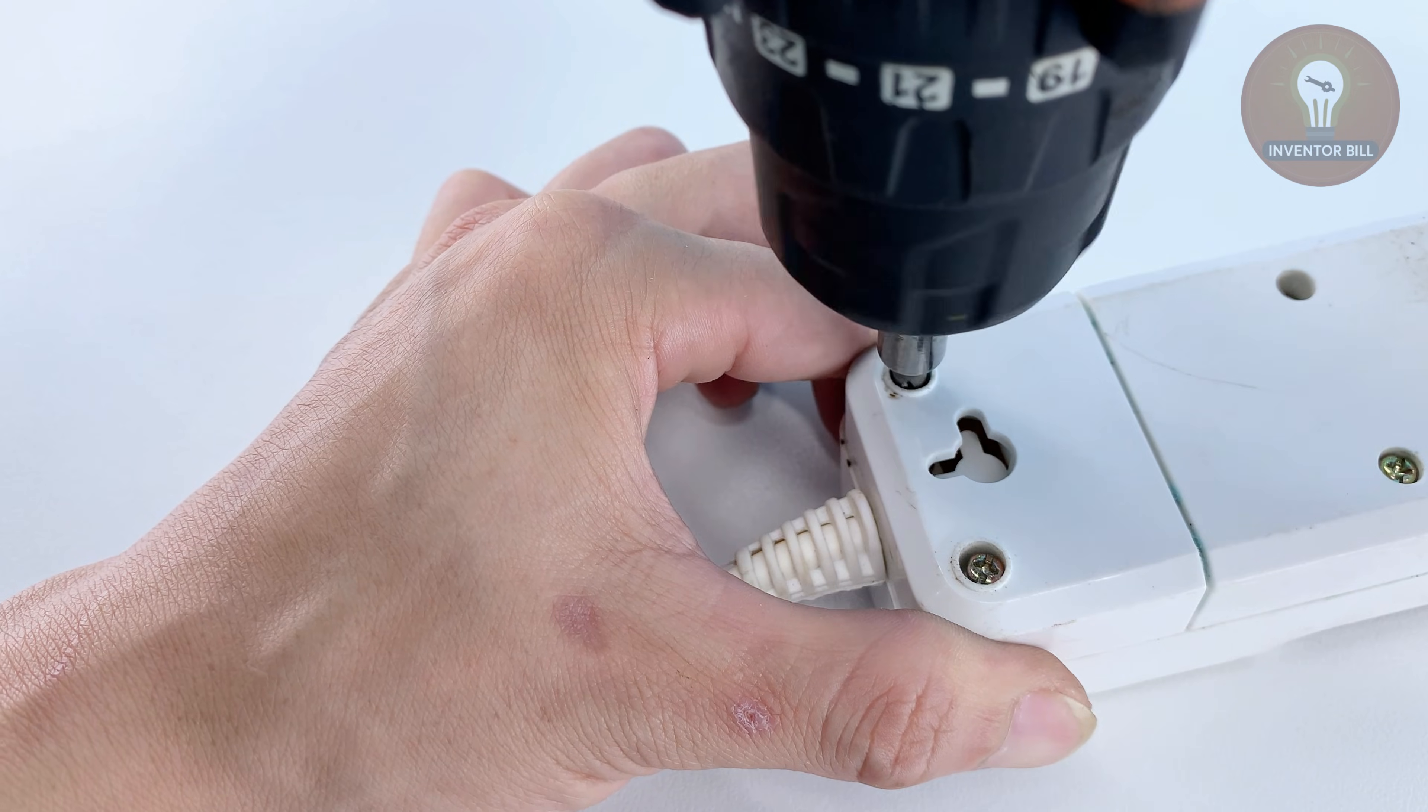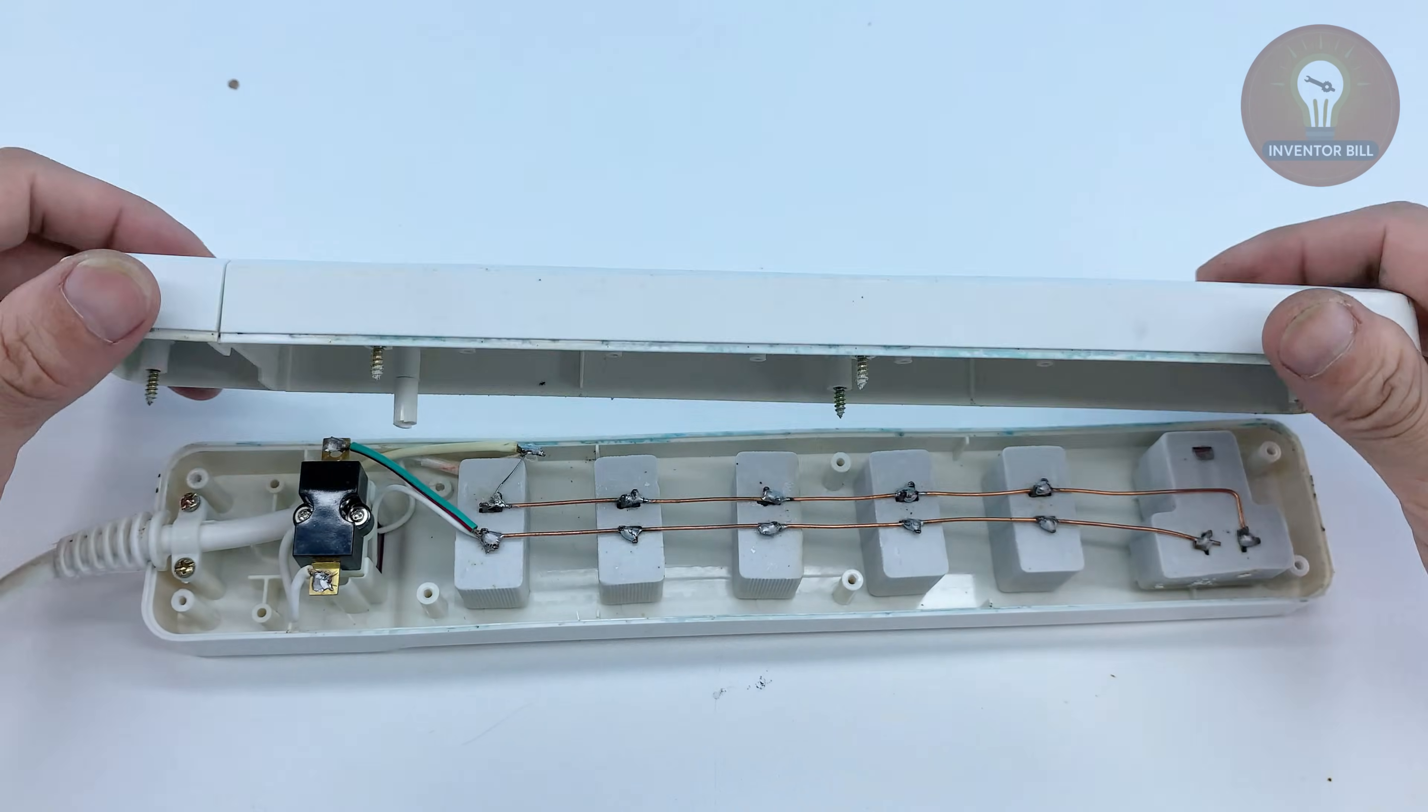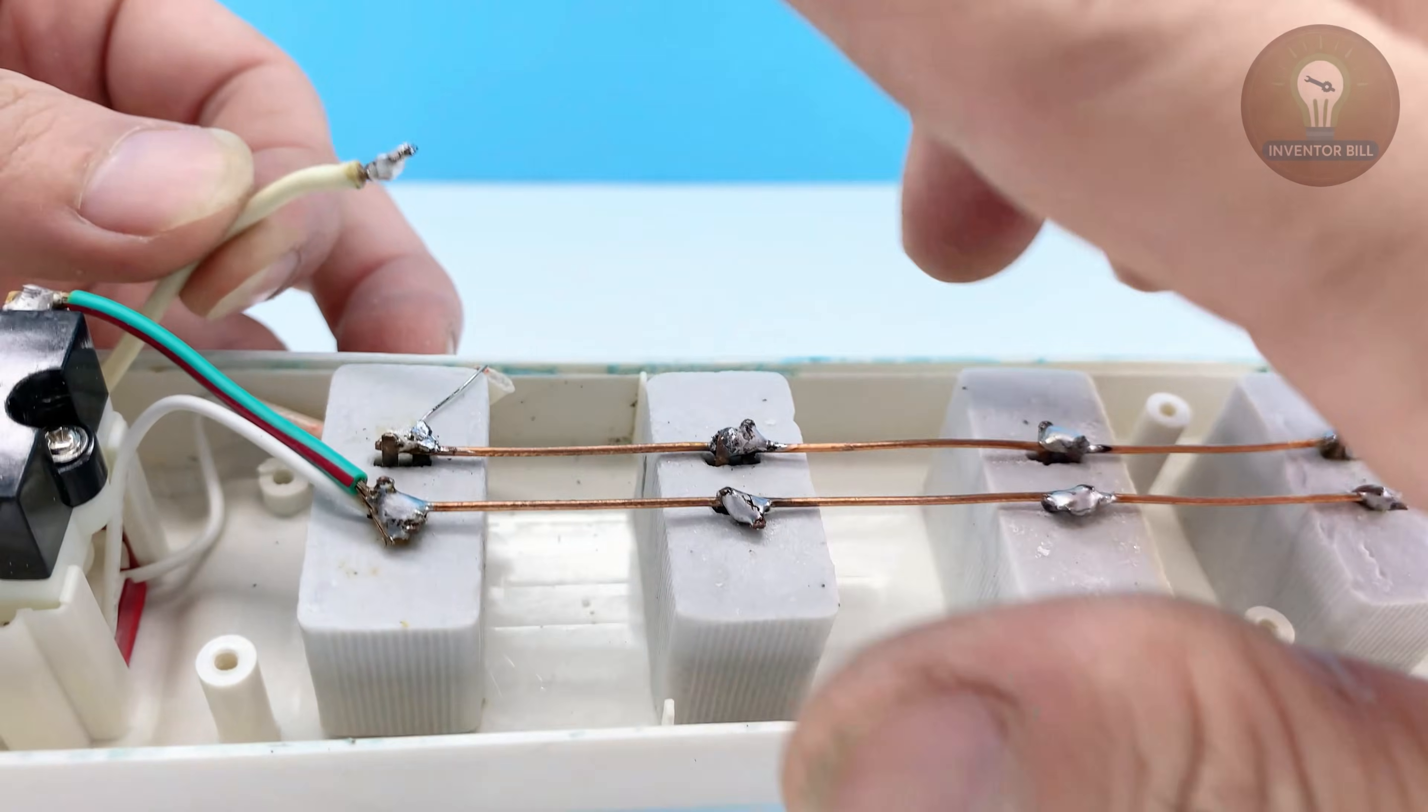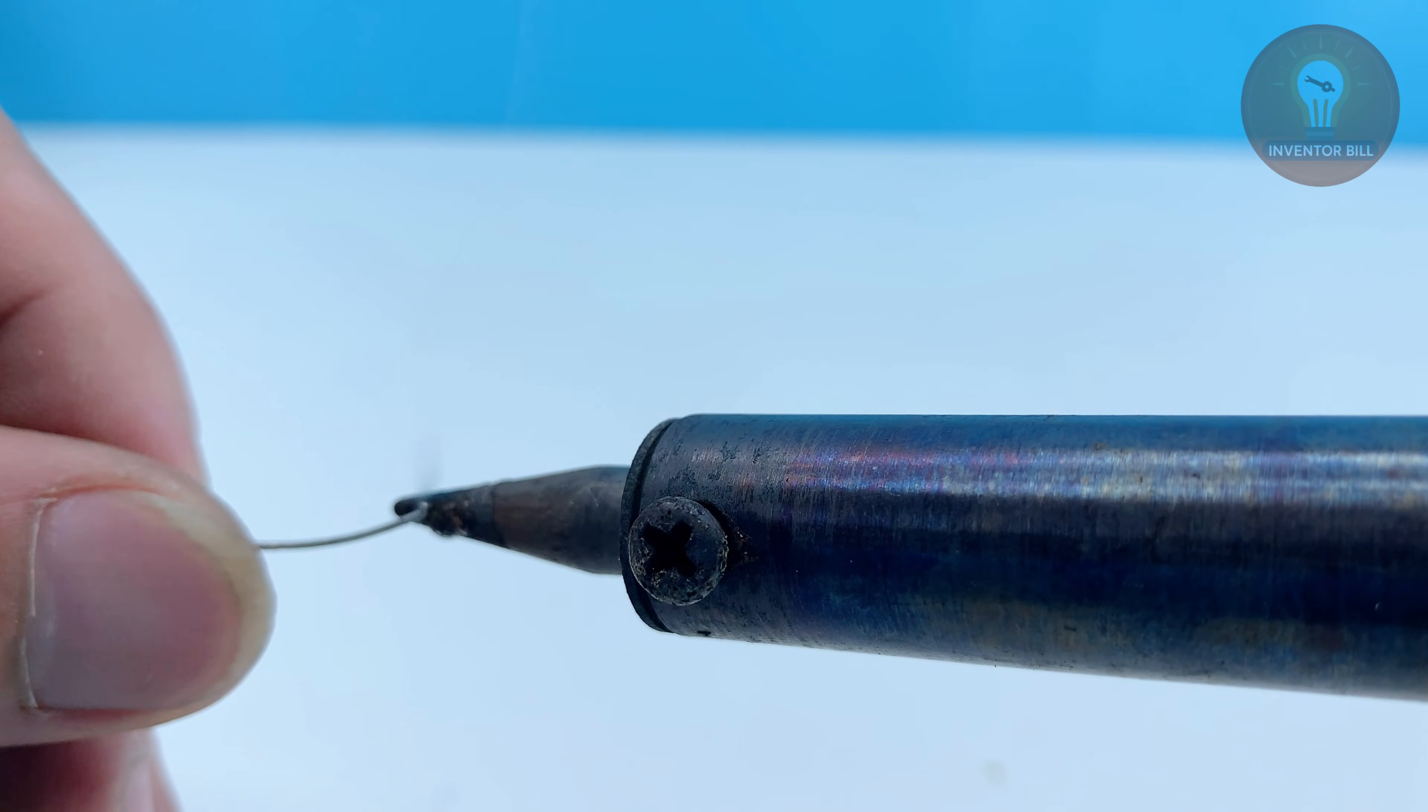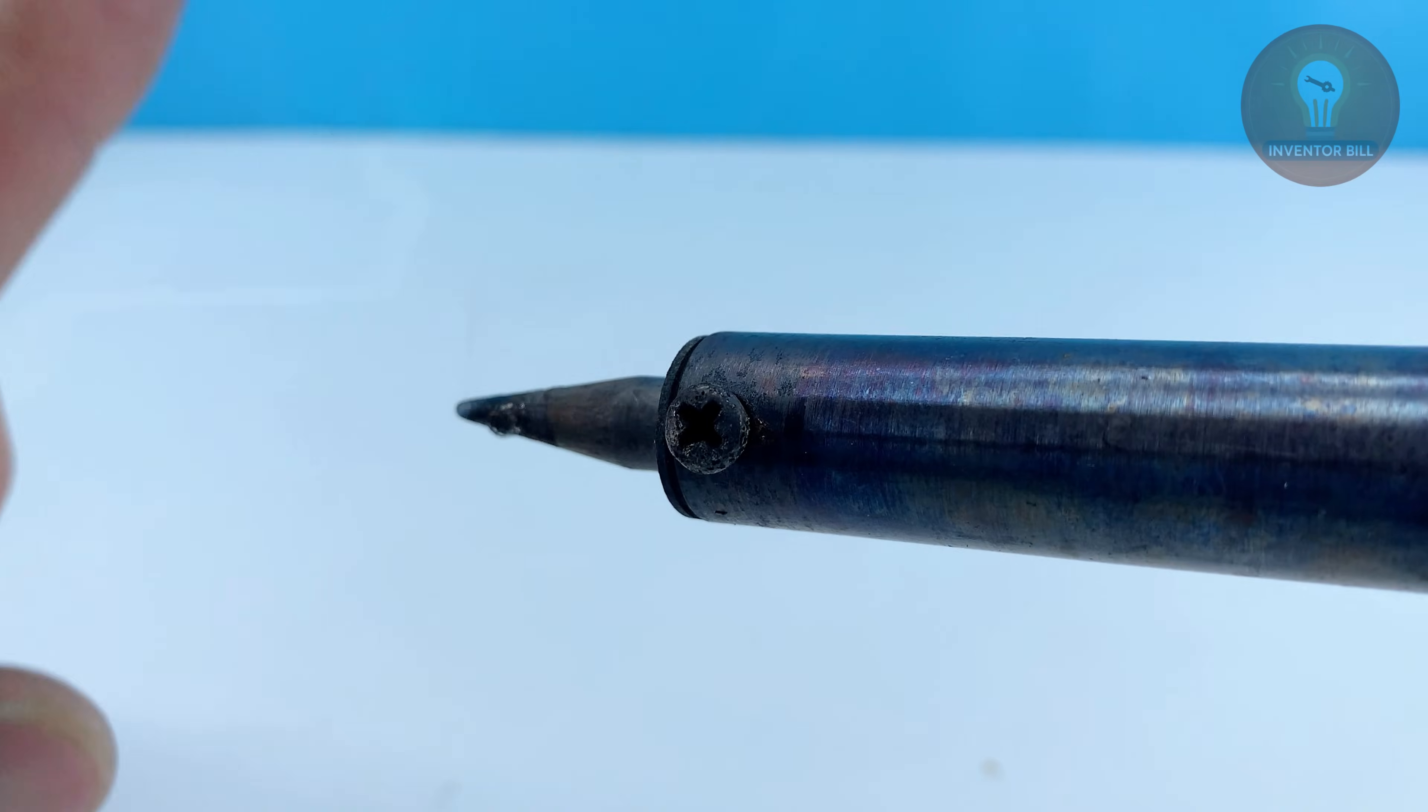The good news is you don't need fancy cleaners or new equipment to fix it. Today I'll show you a simple way to bring your old soldering iron back to life using things you already have at home. It's quick, safe, and will make your iron work like the day you bought it. Let's get started.